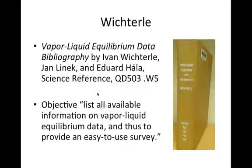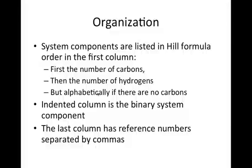First, we're going to look at and talk about the Vapor Liquid Equilibrium Data Bibliography by Wichterle, shown here. Any bibliography is a list of works on a topic, and Wichterle has hundreds of references to articles with experimental vapor liquid equilibria. System components are in Hill order in the left-hand column. Number of carbons, then hydrogens, but otherwise alphabetic by element. In the second column is the binary component, and finally the references are on the right side. I'll be showing you an example soon.